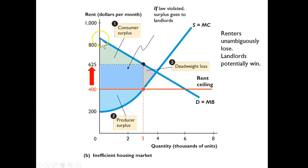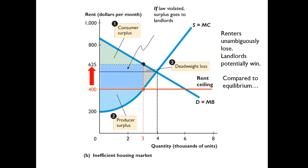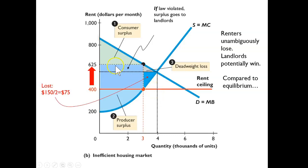In this example, we can see that the renters — the buyers — unambiguously lose. Their consumer surplus is now the area under the demand curve up to the quantity bought and sold of 3,000 and above the new high black market price. What about the landlords — do they win? Potentially they do, but we need to check. A deadweight loss has been created, and the part of that deadweight loss that was producer surplus has been lost to the landlords. However, they have gained some of the consumer surplus, which has been transferred to them due to the black market.